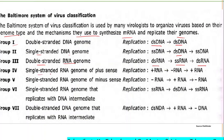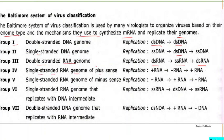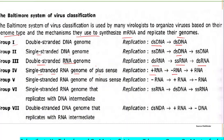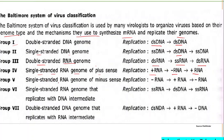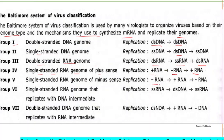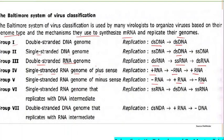Group 4 includes single-stranded RNA genomes of plus sense — these act directly as mRNA, so replication goes plus RNA → negative RNA → plus RNA. Group 5 includes single-stranded RNA genomes of minus sense — the minus RNA strand does not act as mRNA; instead plus-sense RNA is formed as mRNA, then minus-sense RNA is re-formed.